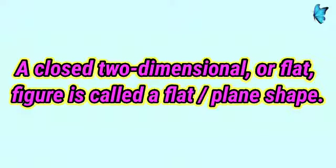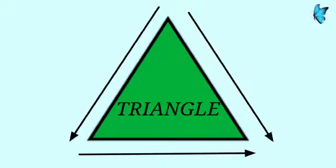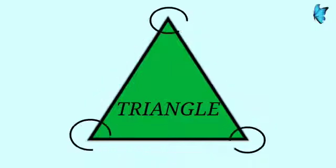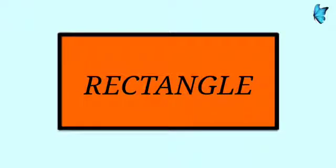This is a triangle. A triangle has three sides and three corners. This is a rectangle. A rectangle has four sides and four corners.